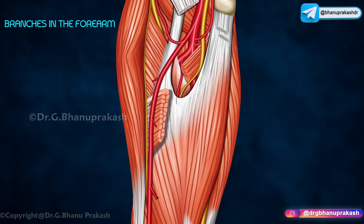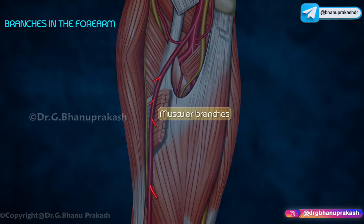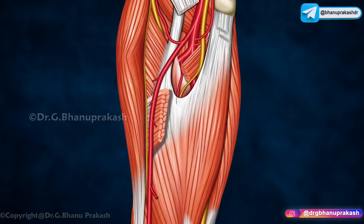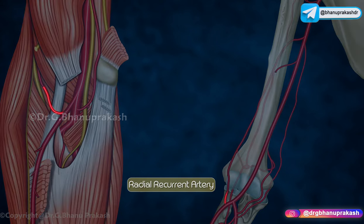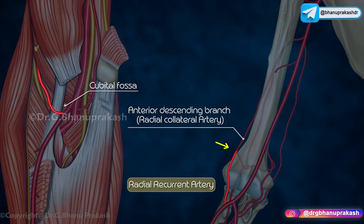Branches in the forearm. The radial artery gives off muscular branches to the muscles on the lateral aspect of the forearm. The radial recurrent artery arises in the cubital fossa, ascends and anastomoses with the anterior descending branch of the profunda brachii artery.